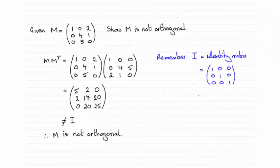Hi there. Now for this part of the question, you're asked to show that the matrix M is not orthogonal.